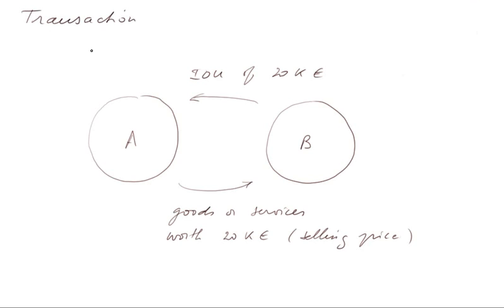The transaction takes place today, at a date called T. It is a transaction between two agents: A, say ourselves, and B, sometimes noted the rest of the world. We sell to B goods or services worth 20,000 euros at selling price, and will receive at the same time from B an AOU of 20,000 euros.